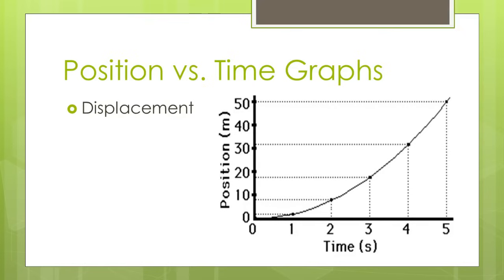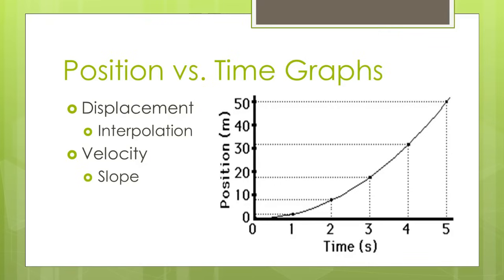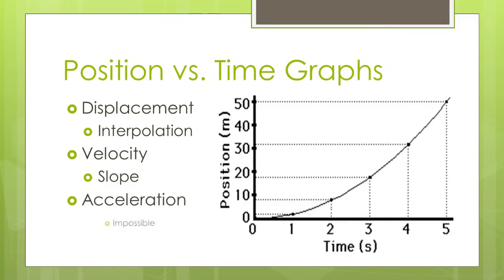From this graph we can find a couple different pieces of information: displacement and velocity. We can interpolate — reading the graph — so if I wanted to know the displacement at four seconds, I just read the graph: it's 30 meters. To find velocity, we use the slope of the position versus time graph. However, in the case of acceleration, because velocity is changing, the slope keeps changing as time goes up — the slope is getting steeper, which means velocity is getting faster. There is no way on this graph to find acceleration; it's impossible to derive acceleration directly from a position versus time graph.